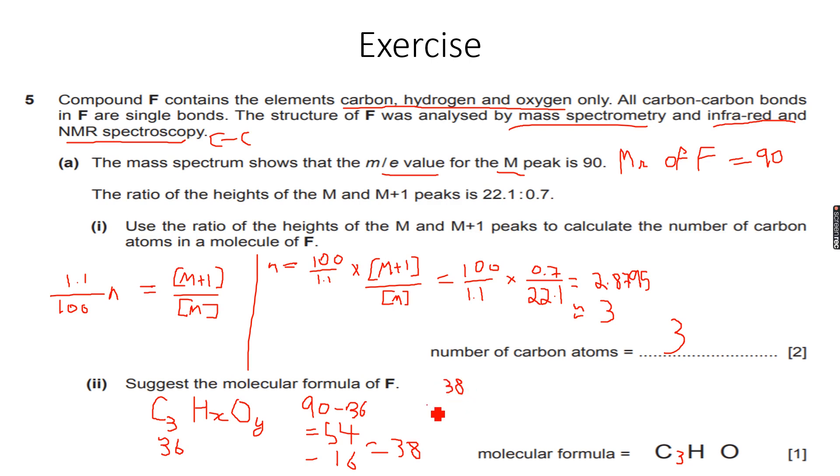Subtracting another oxygen gives me 22. Now again, 22 hydrogens is too much for three carbons and one oxygen, so it's not possible. I'll subtract another oxygen.